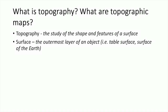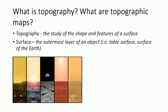Topography is the study of the shape and features of a surface. Researchers and scientists are generally interested in the Earth's surface or in the surfaces of other planetary bodies, but this definition can extend to the surface of any object.